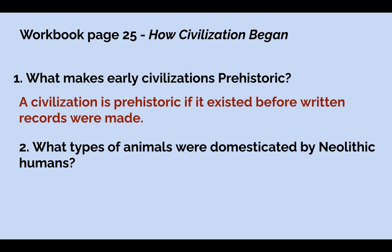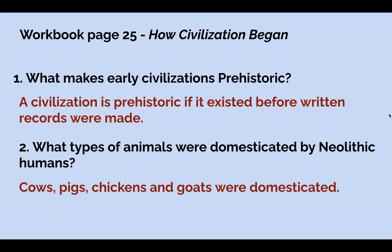Question two: what types of animals were domesticated — tamed — by Neolithic humans? They said in the video that cows, pigs, chickens, and goats were tamed. Do you remember what they were used for? They used them for food — the milk, the meat, the eggs from chickens. They even used the skin to make clothing in the case of cows.